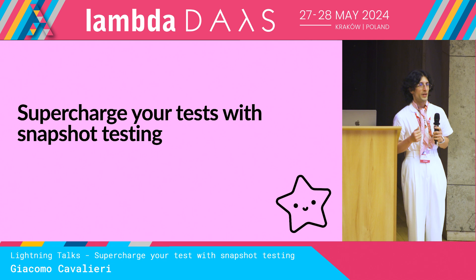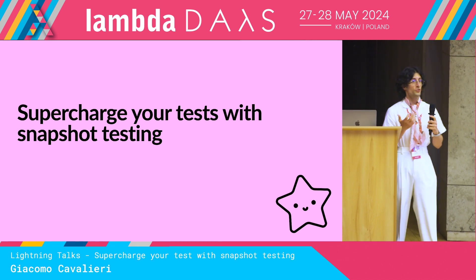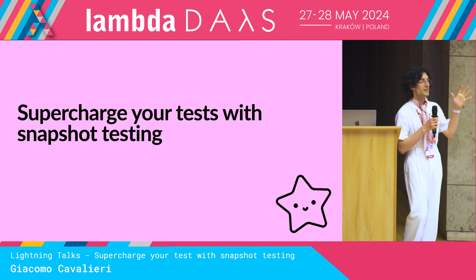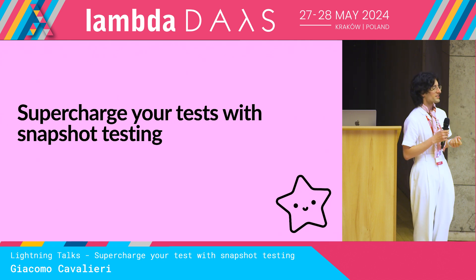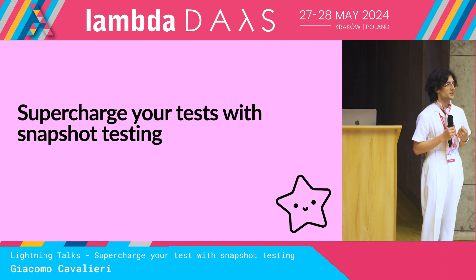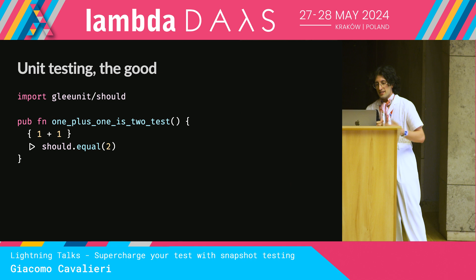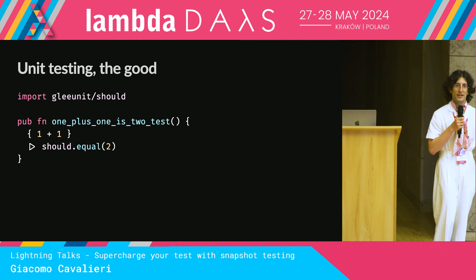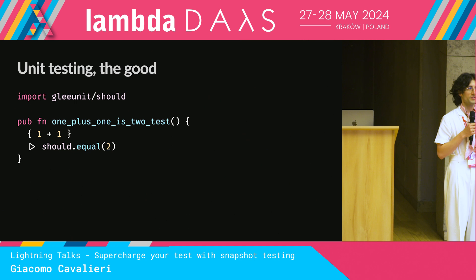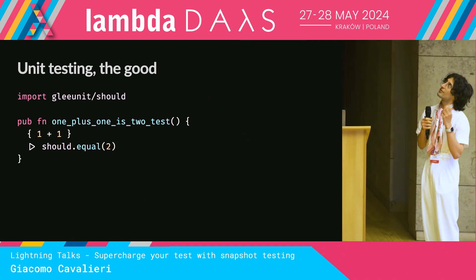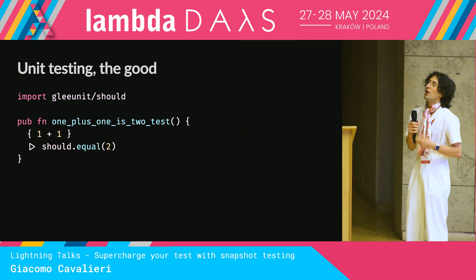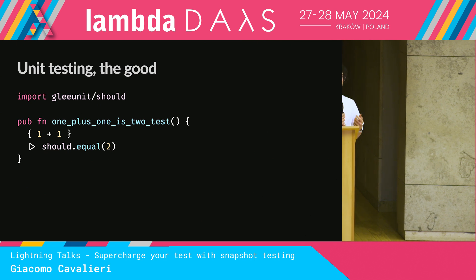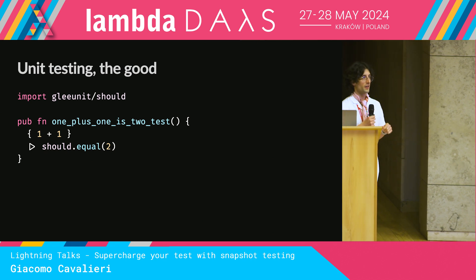Let's start with something I think we can all agree on. Unit tests are good, maybe even better than good — they're great, but we don't write nearly enough of those. Also, sometimes it can be quite boring writing unit tests. This is how you would write a unit test in Gleam. Even if you've never seen the language before, I think you can get a good sense of what is going on here. It reads almost like an English sentence: one plus one should equal two. That's fine and all, but we wish our unit tests were this simple in the real world.